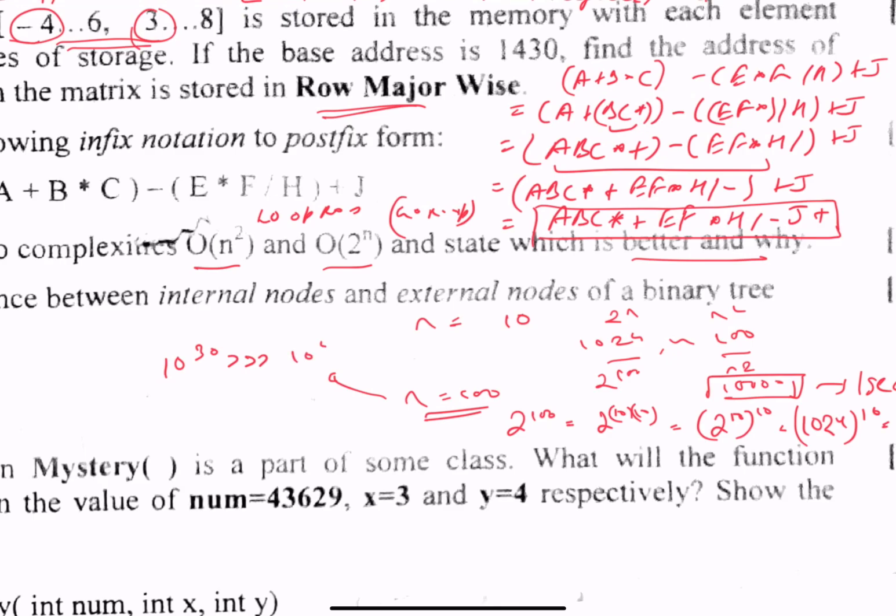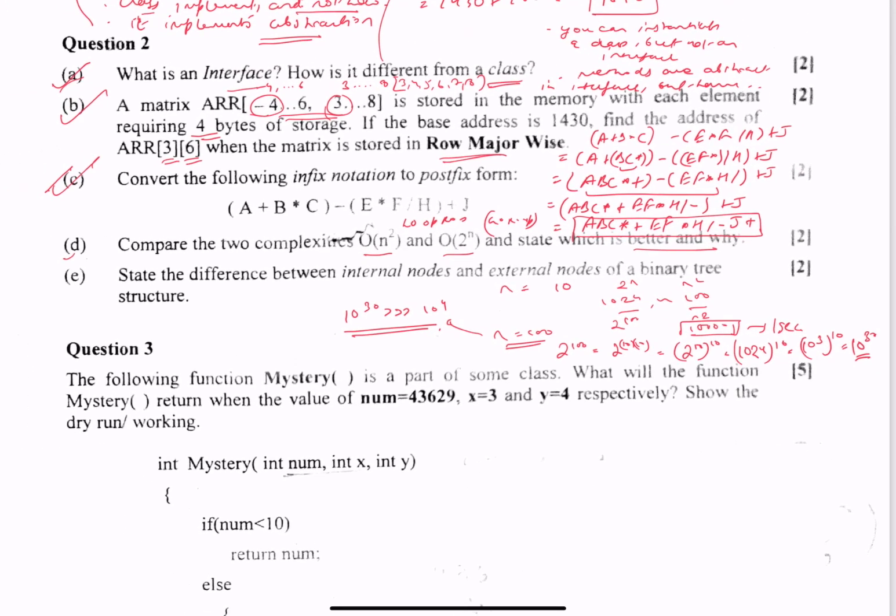Now when you compare for n = 100, 10³⁰ is much much larger than 10⁴ which is n². So O(n²) is better than O(2ⁿ). Why? You can give the values of n.